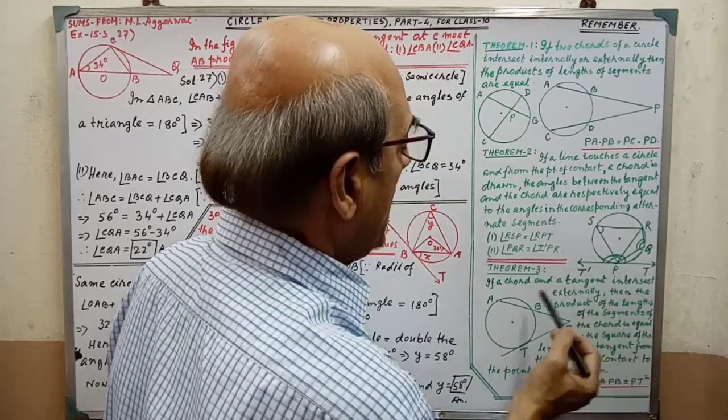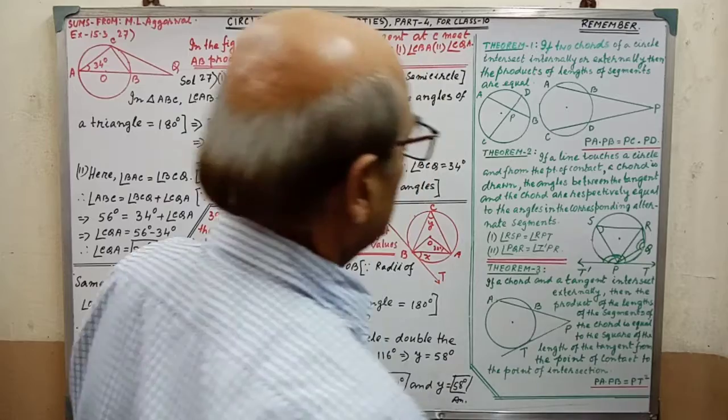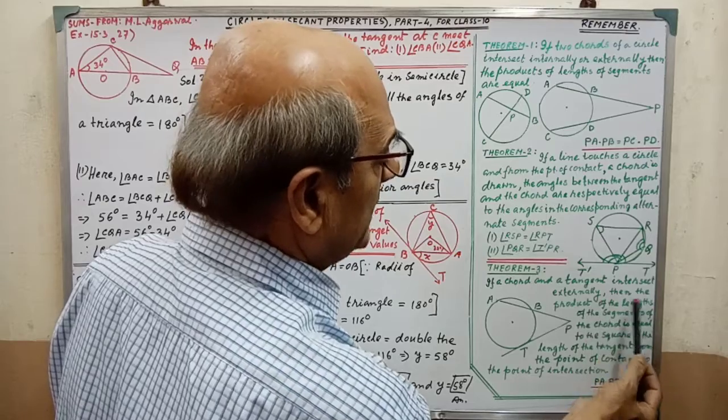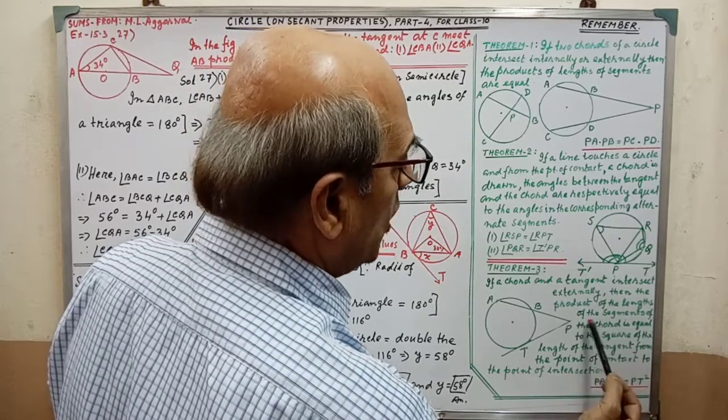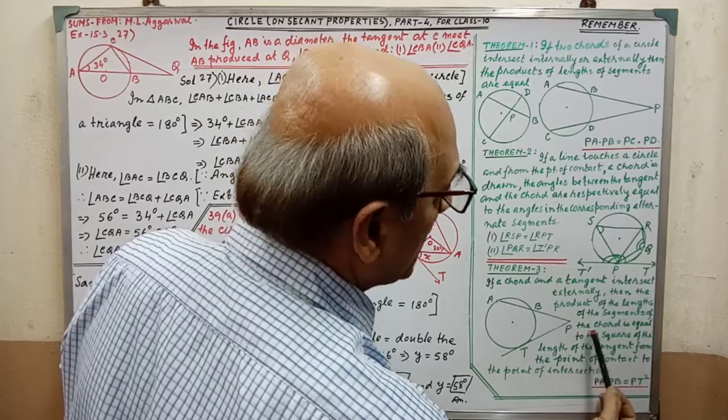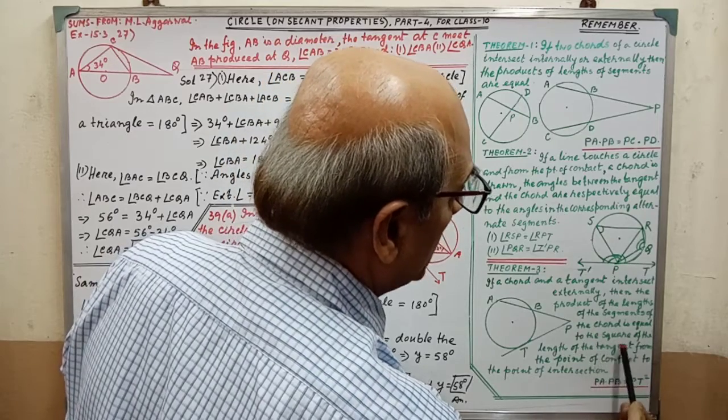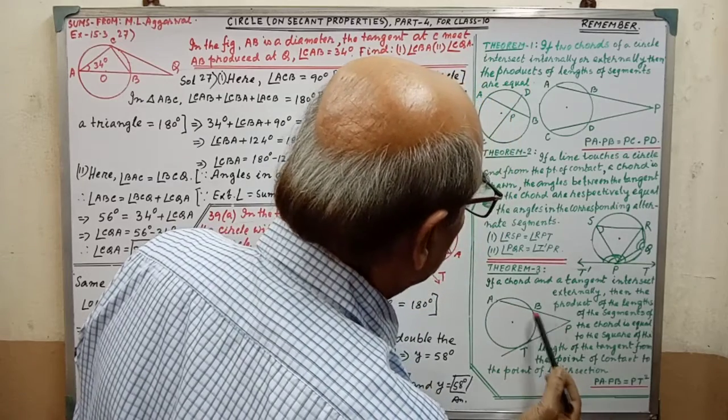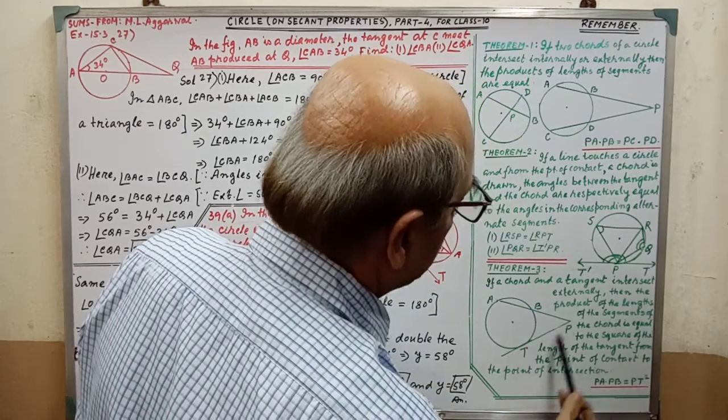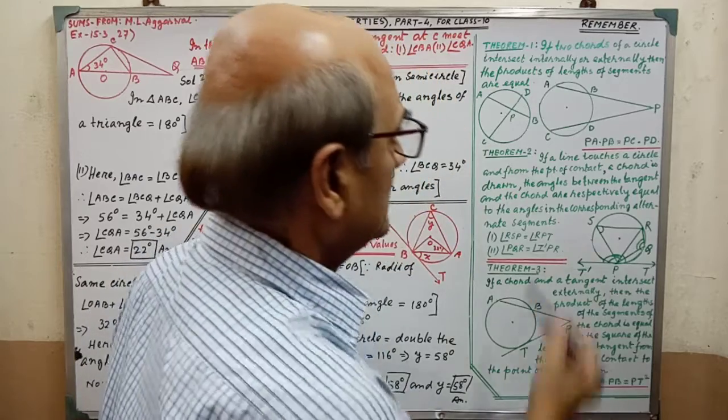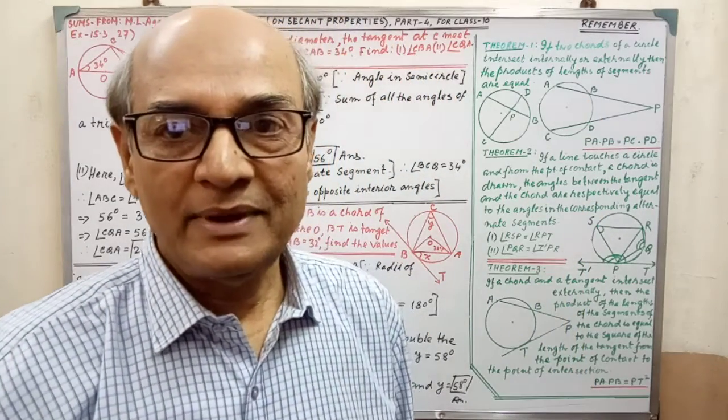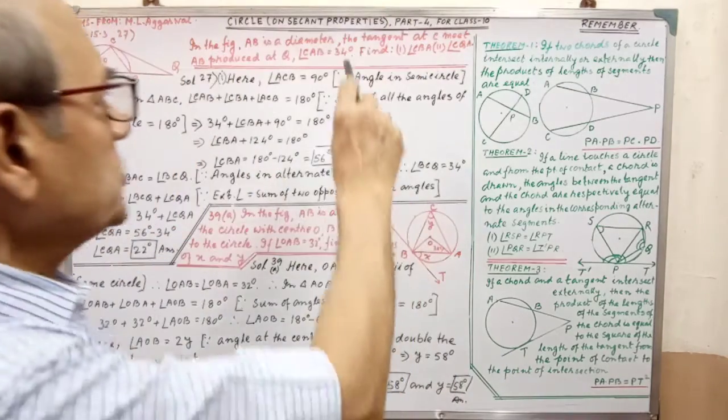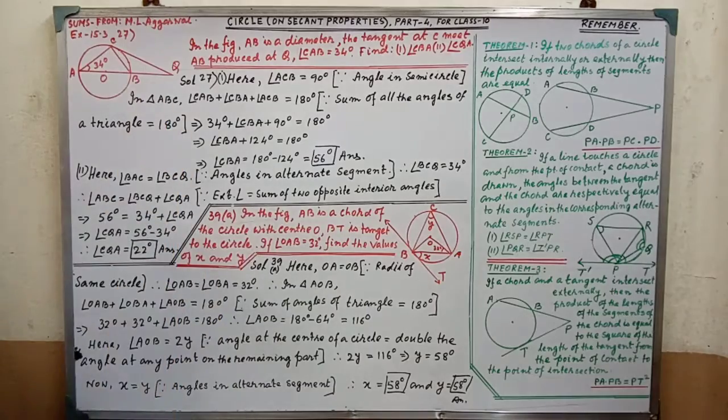With diagram, you have to remember this. Theorem 3: if a cord and a tangent intersect externally, then the product of the length of the segment of the cord is equal to the square of the length. That is PA into PB equal to PT square, that is tangent. The statement, diagram, and conclusion, these three things you have to remember.